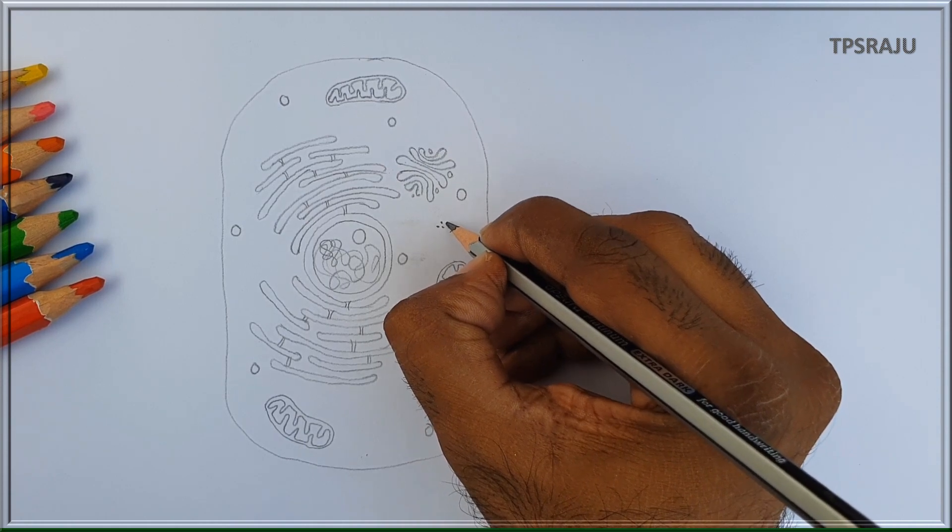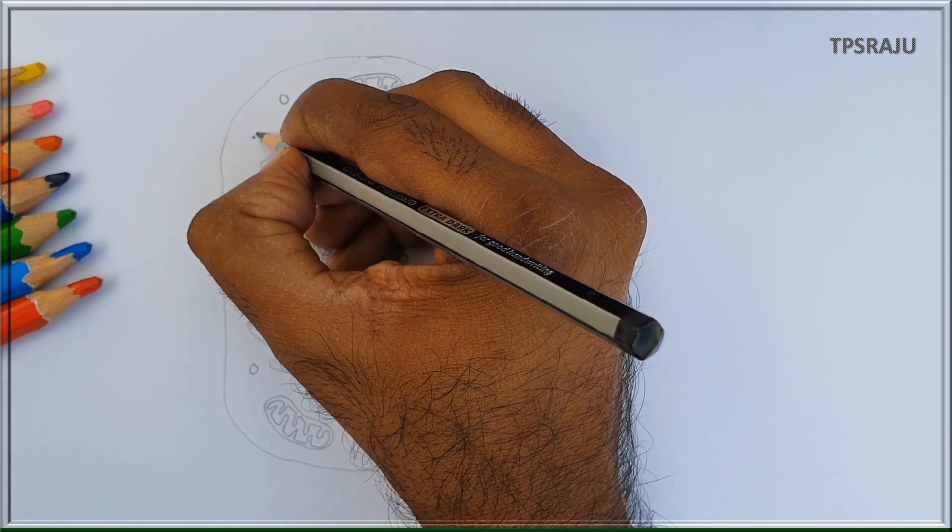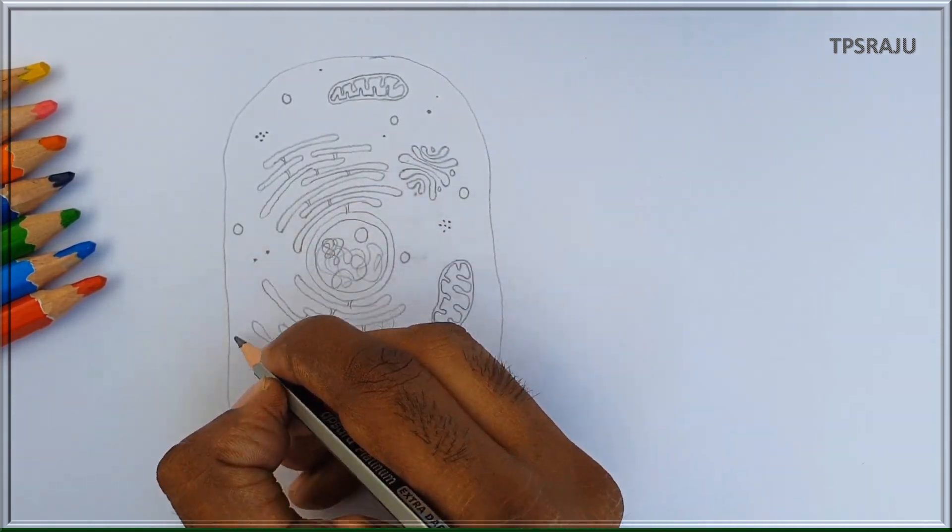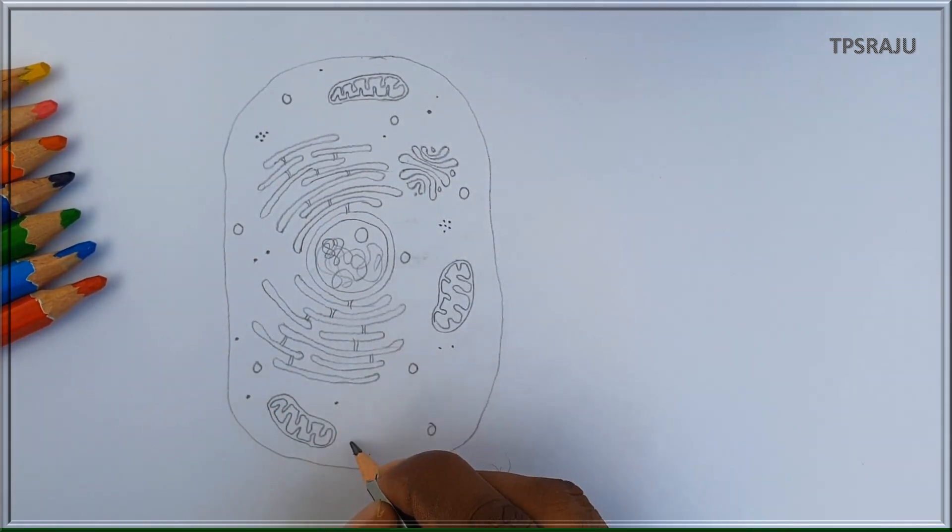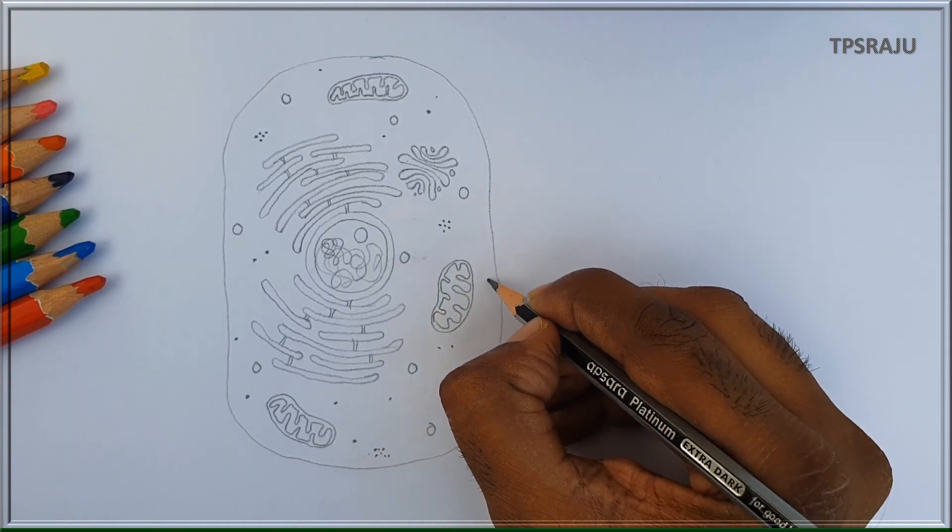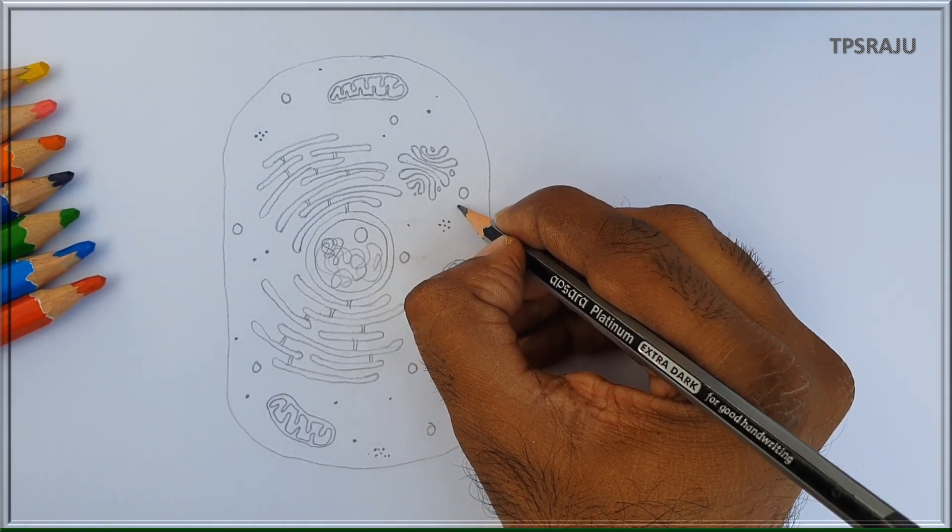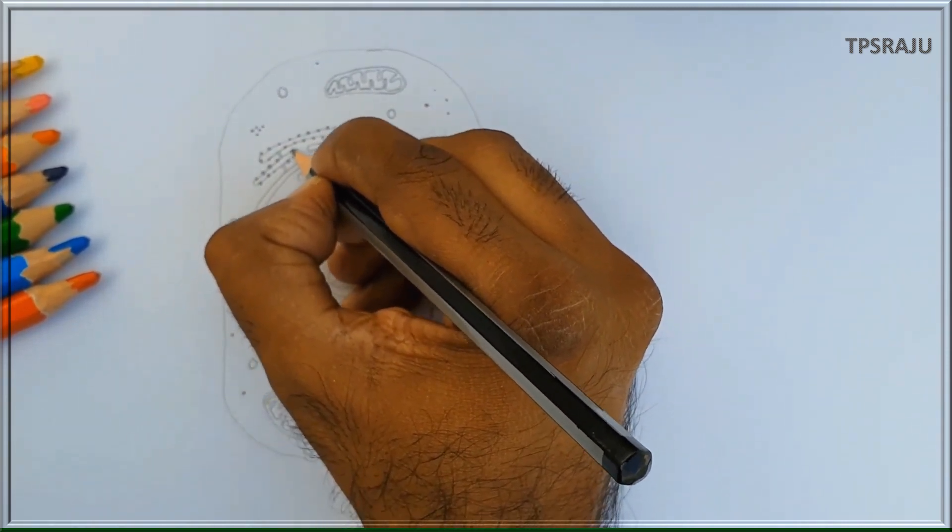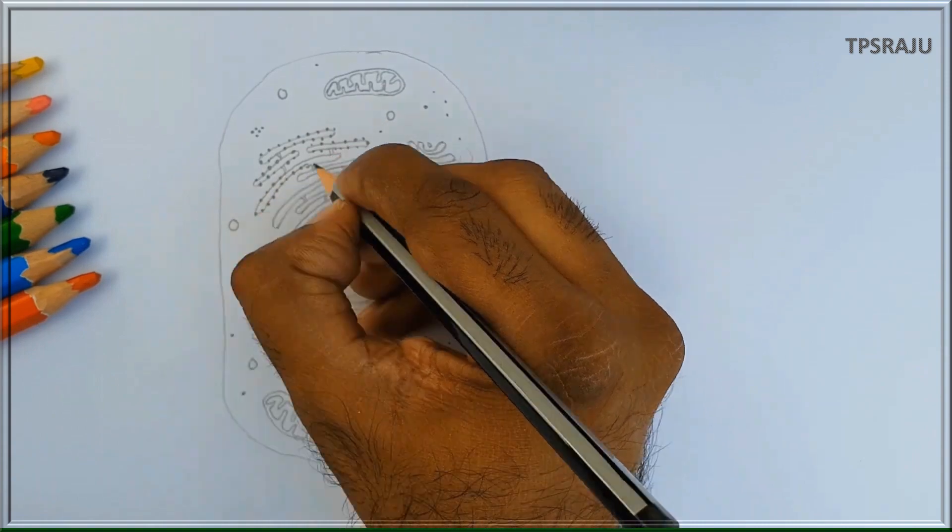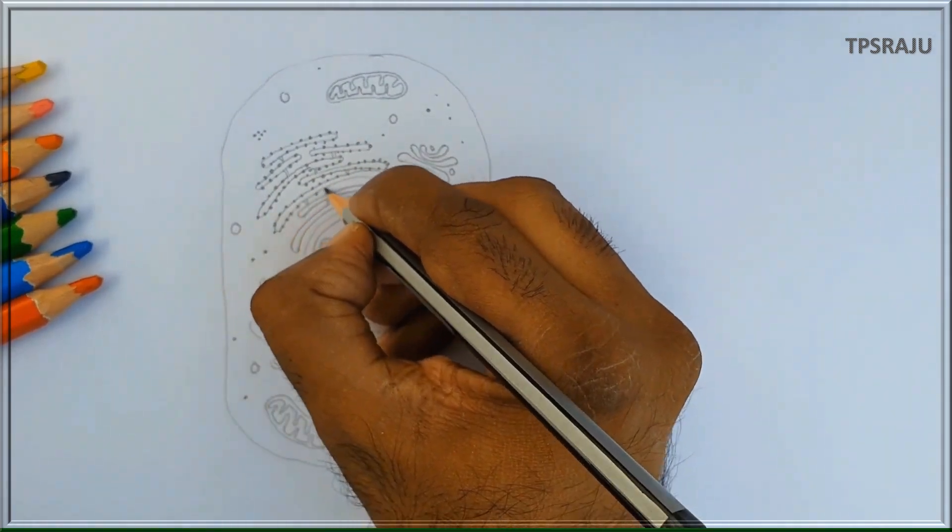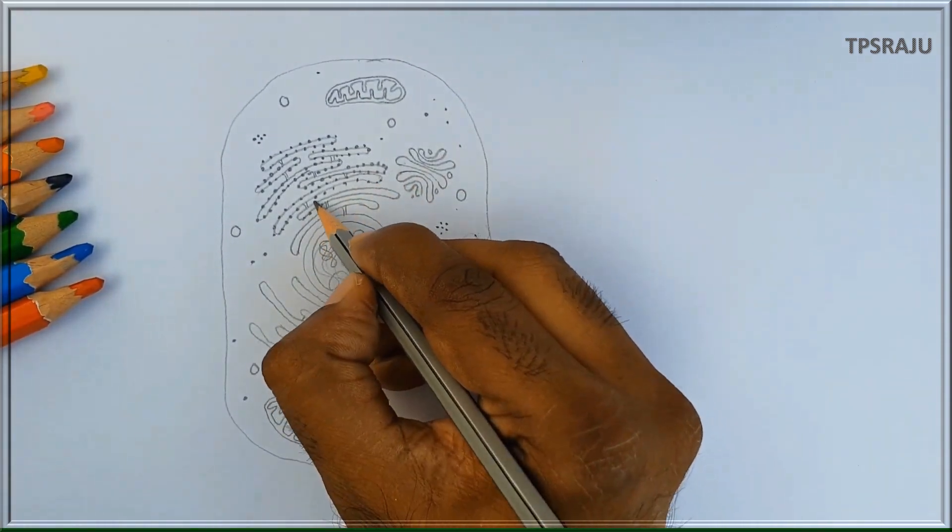Large number of granule-like structures are present in the cytoplasm called ribosomes. They are also present on the surface of the endoplasmic reticulum. Endoplasmic reticulum with ribosomes appears as rough, hence it is called rough endoplasmic reticulum.